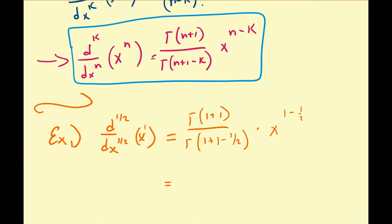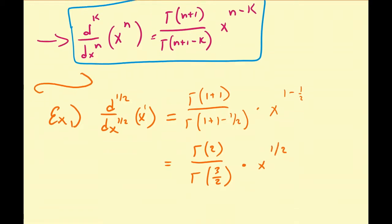This is going to be equal to gamma of 2 divided by — since 1 plus 1 is 2, and 2 minus one-half is three-halves — gamma of three-halves, times x to the one-half, since 1 minus one-half equals one-half.